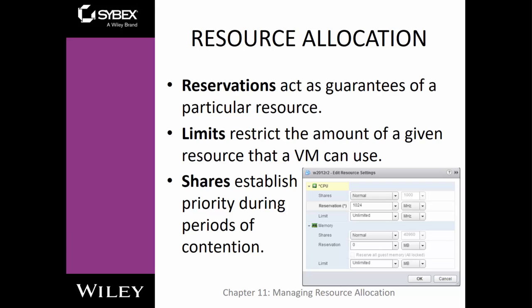You can limit, which is to restrict the amount of a given resource that a VM can use. So even though you may give it a 3-gigahertz processor, you may limit it to 1-gigahertz. You can also do what's called shares. Shares establish priority during periods of contention — basically, when you're running low on resources, shares are a way to prioritize what resources may get used first.